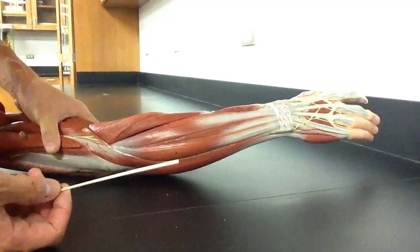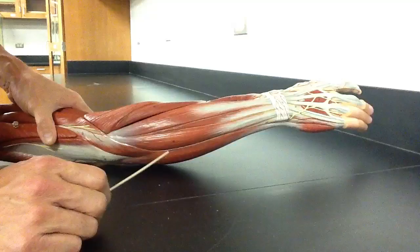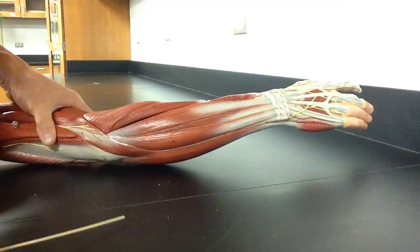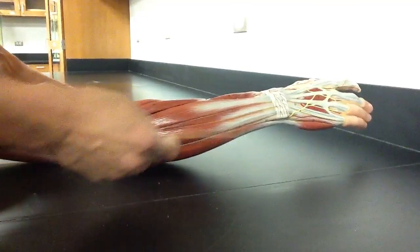So here we are with the posterior compartment of the forearm. Now the posterior compartment of the forearm has a good number of muscles. Some people say they're 11, some people say they're 12. We're going to go with 12 because I want to be complete with how many muscles you need to know. So here they are.